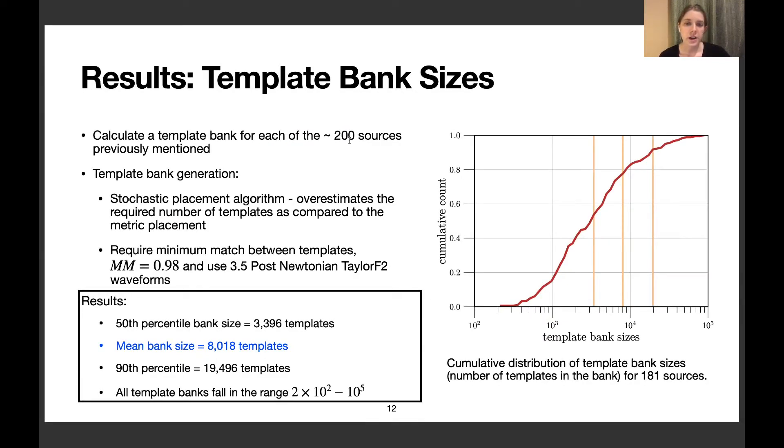Here I show the results of the template bank sizes we calculated. We used the stochastic placement algorithm, which overestimates the required number of templates compared to a metric placement algorithm. We require a minimum match of 0.98 for template placement and use 3.5 post-Newtonian TaylorF2 waveforms. We calculated a template bank for each of our approximately 200 sources.